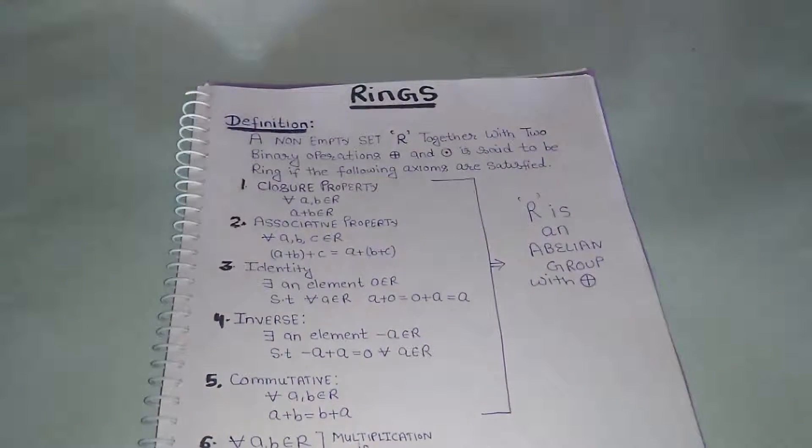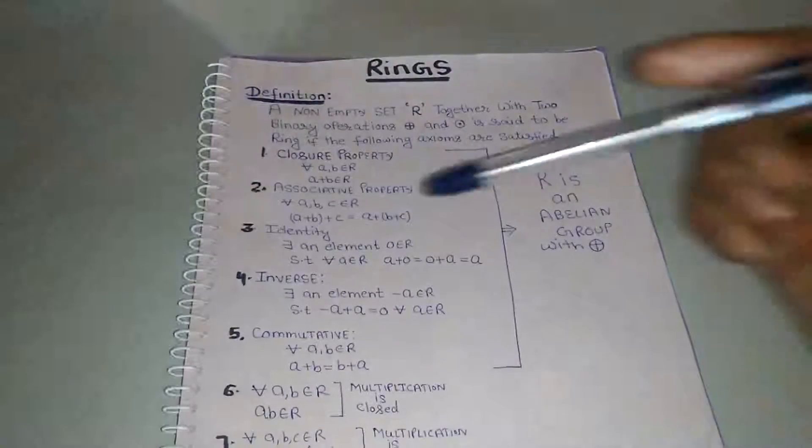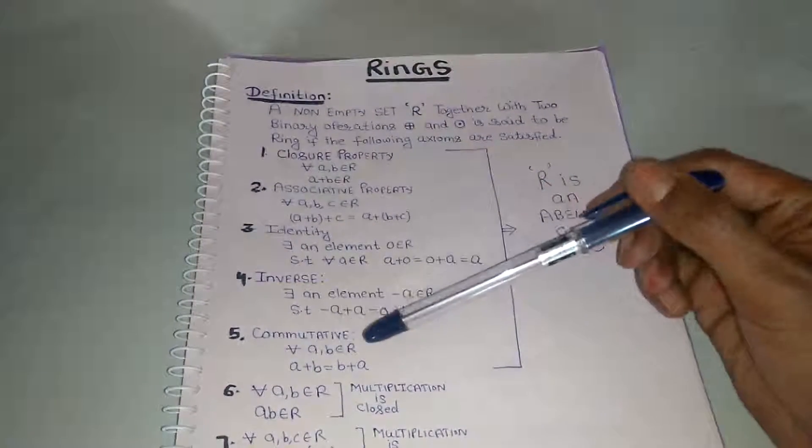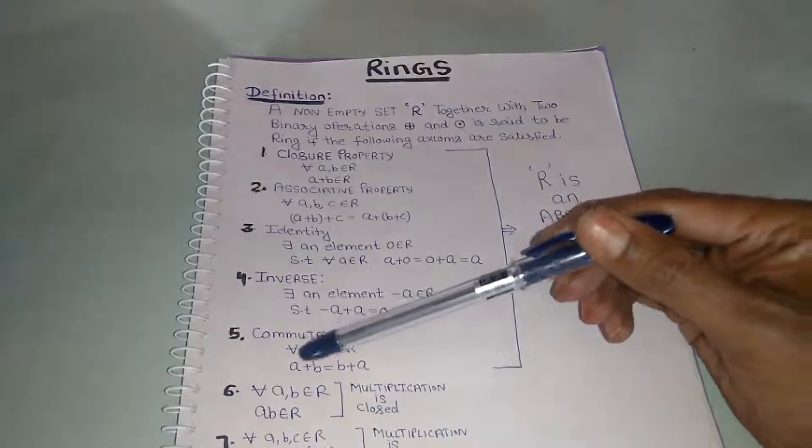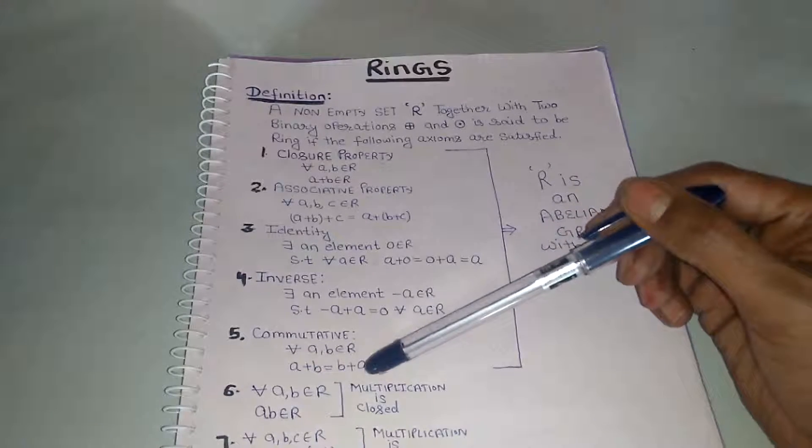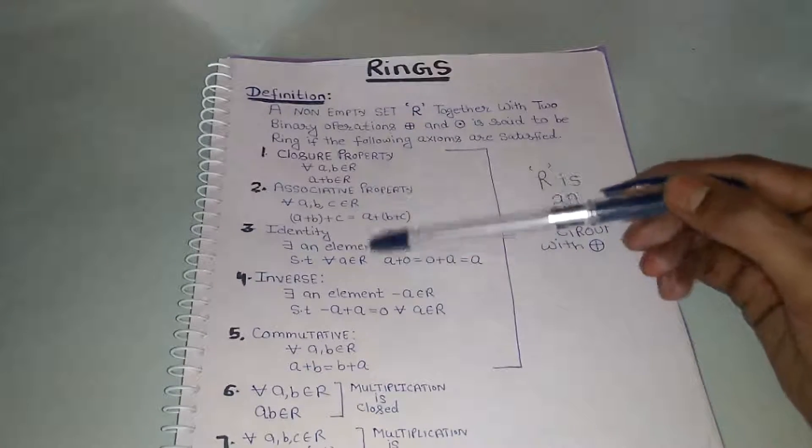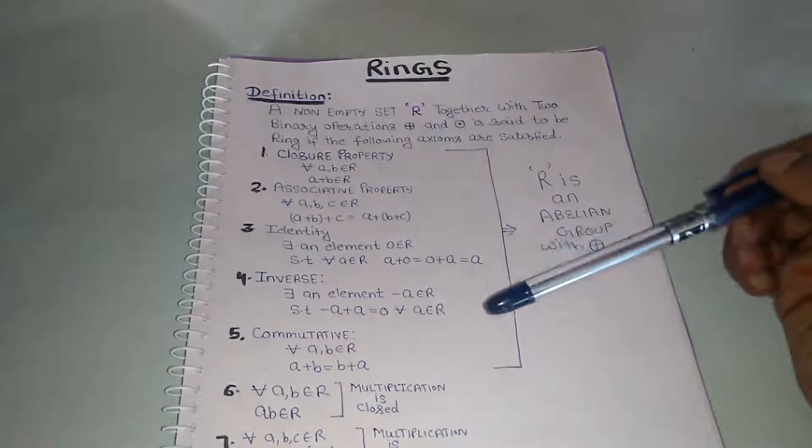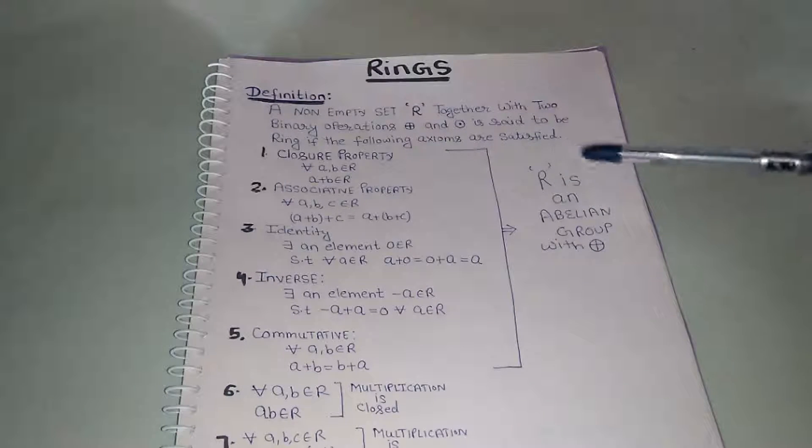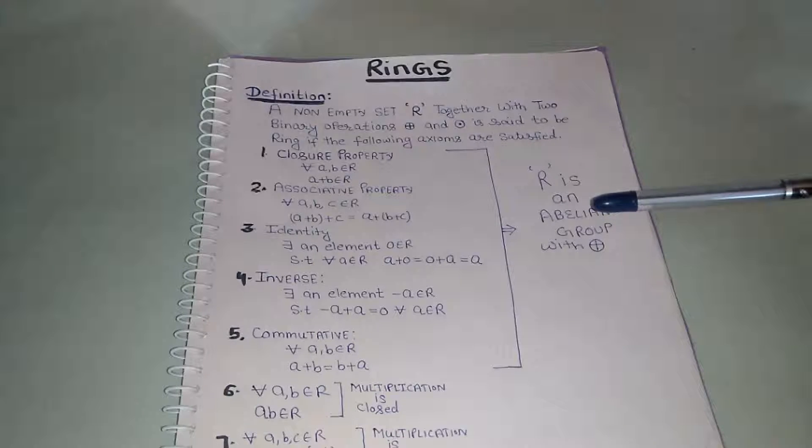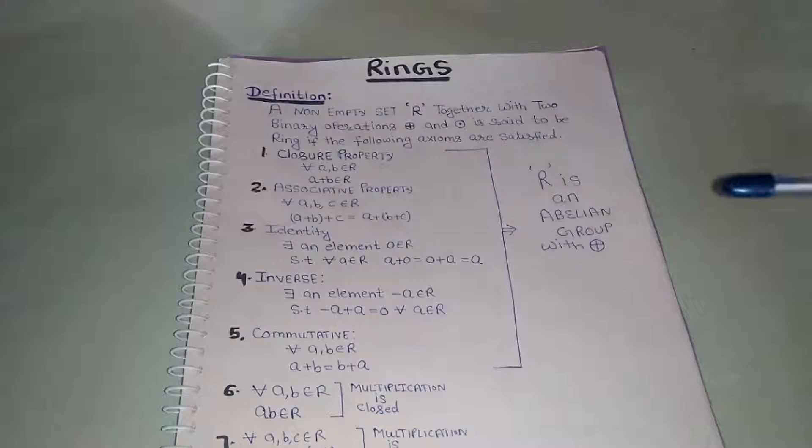Fifth one is commutative: for all A, B belongs to R, A plus B must be equal to B plus A. If all these five properties are satisfied by R, this means we can say that R is an abelian group under the binary operation of addition.